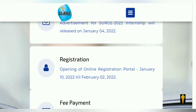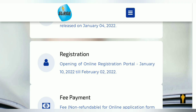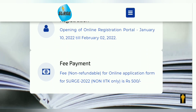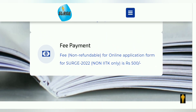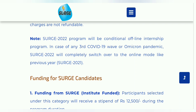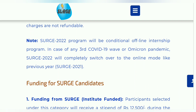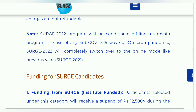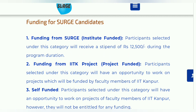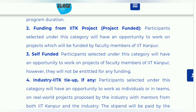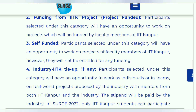Advertisement 4th of January को आया था। Registration start होगा 10th of January, और चलेगा 2nd of February तक। Fee payment 500 rupees — उसके दिए गए link में जाके payment करना है, यह non-refundable है। यह जो SURGE research program हो रहा है — due to third wave of COVID-19 और Omicron pandemic — completely online होगा। 2021 में भी यह program online हुआ था, इस साल भी online होगा। Funding में SURGE के तरफ से, institute के तरफ से, self-funded, और industry के तरफ से — ये categories हैं।